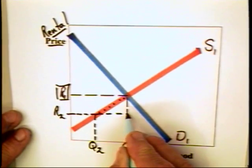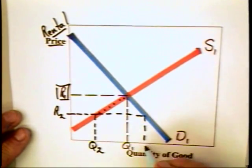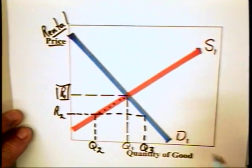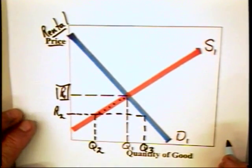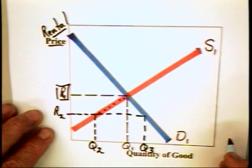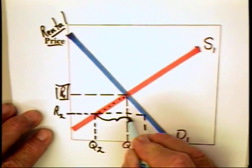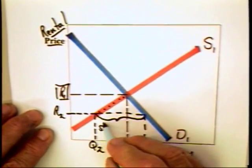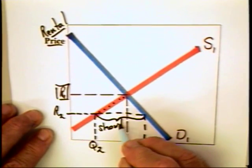At that rental price, however, they're going to be quantity Q3 demanded by potential tenants. The result is that you have a shortage equal to this distance here.